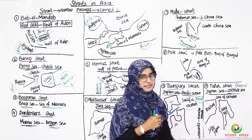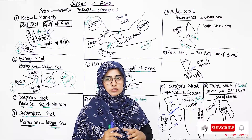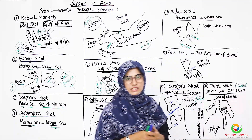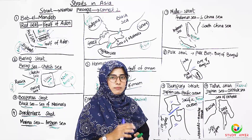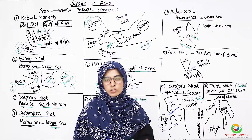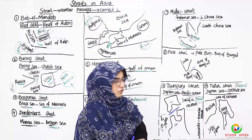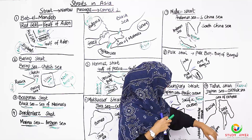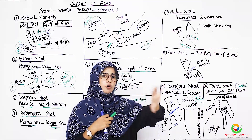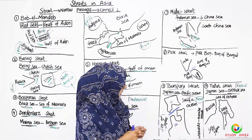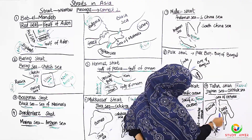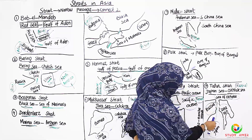The last strait is the Tatar Strait, located in Russia. If asked which two water bodies, you say the Sea of Japan and the Sea of Okhotsk. If asked which land masses, you say Russia on one side and Sakhalin Island on the other. Russia is the large land mass, and Sakhalin Island is the island on the other side.